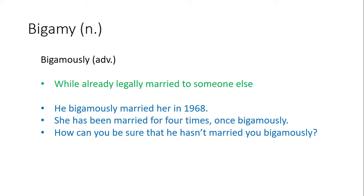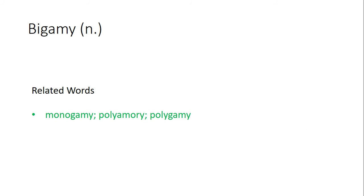The adverb form of bigamy is bigamously, meaning while already legally married to someone else. Examples: Number one, he bigamously married her in 1968. Number two, she had been married four times, once bigamously. Number three, how can you be sure that he hasn't married you bigamously? Related words: monogamy means being married to one person; polyamory and polygamy mean being married to more than one person — polyamory means having more than one partner and polygamy means having more than one wife.